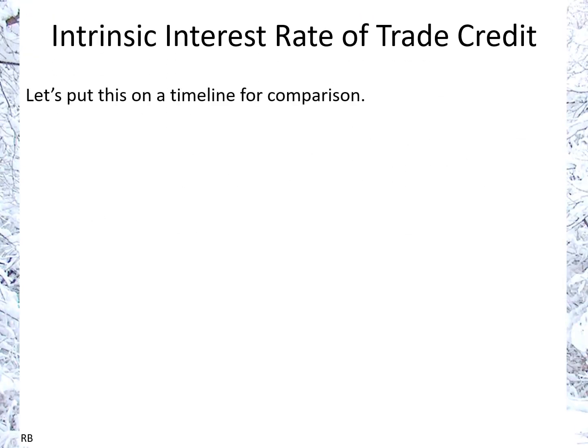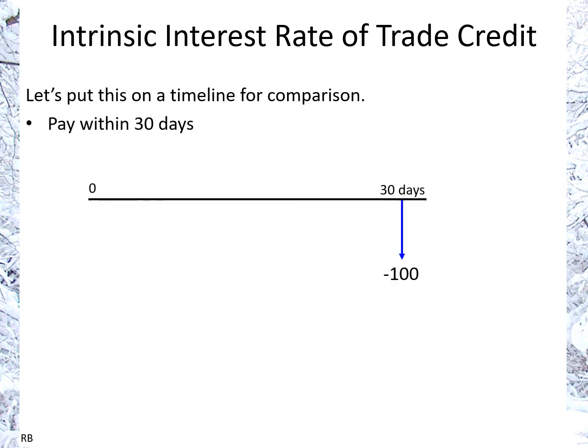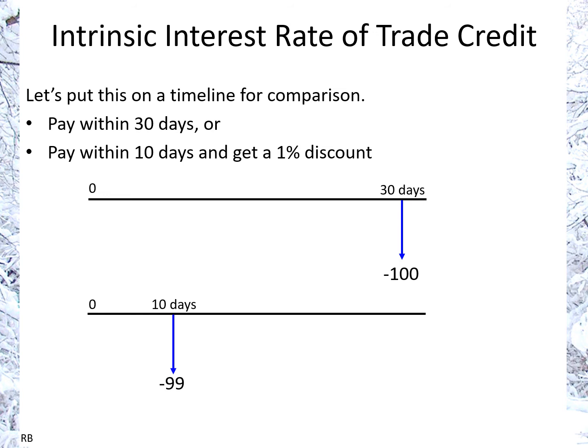Let's compare the two options on the timeline. Paying within 30 days simply means paying 100 — shown as a minus because it's paying out — 100 in 30 days. The other option is paying within 10 days, and with a discount of 1%, we would be paying 99 in 10 days.